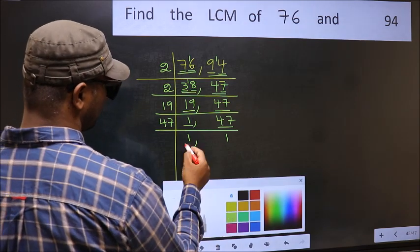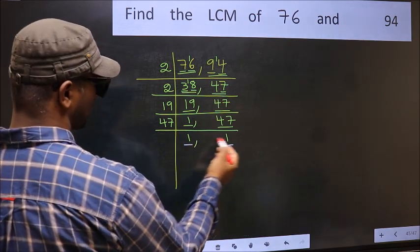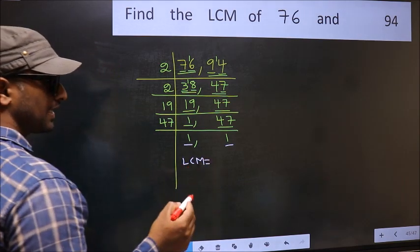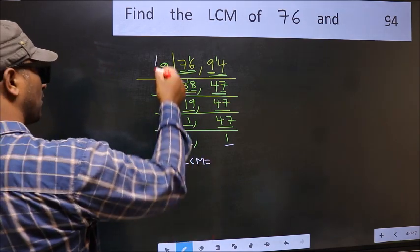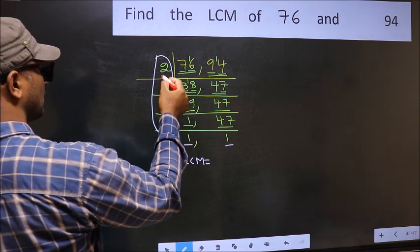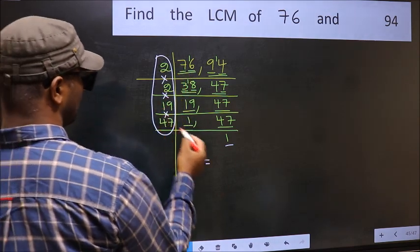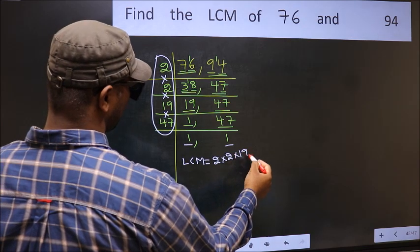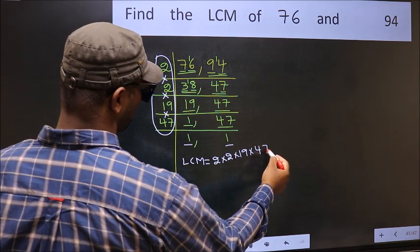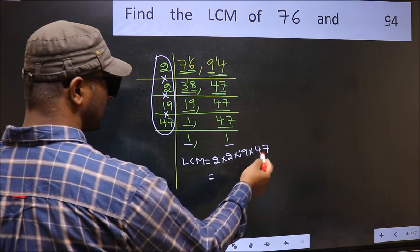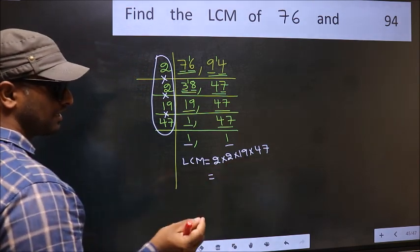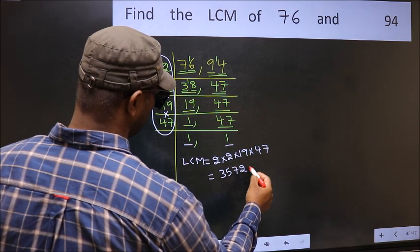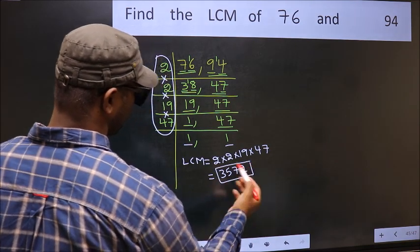So we got 1 in both the places. So our LCM is the product of these numbers, that is 2 into 2 into 19 into 47. When you multiply these numbers, you get 3572 as our LCM.